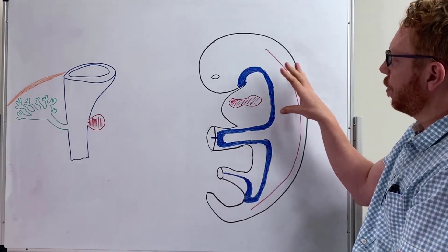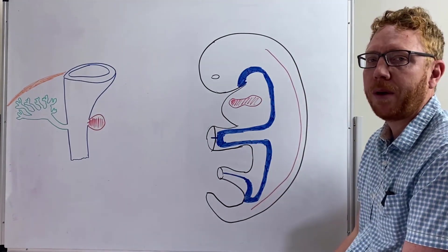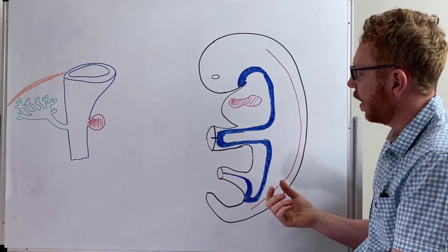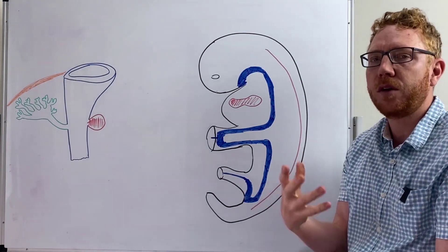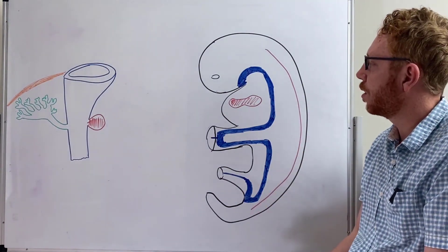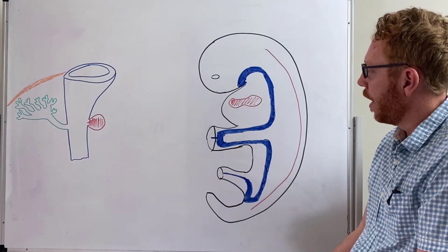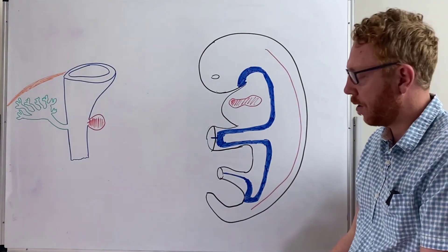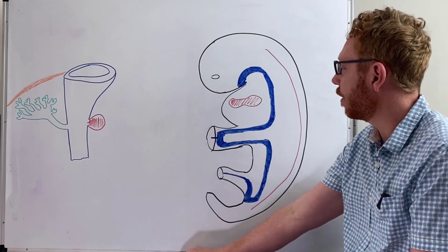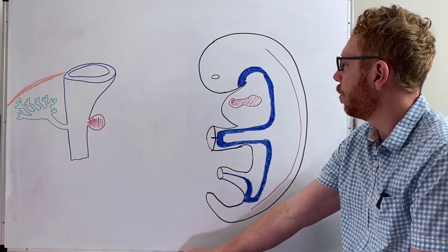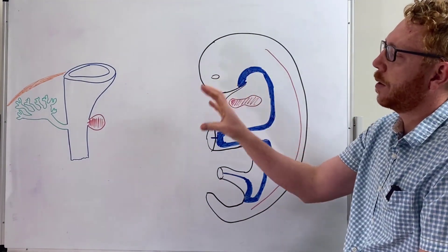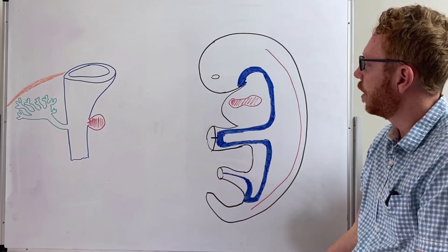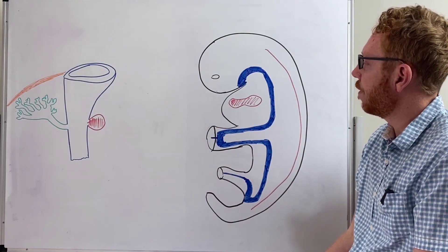The gut tube is broken into three main parts: the foregut, the midgut, and the hindgut. Today we're going to focus on a specific part of the foregut, which is essentially the stomach, the duodenum, and then the developing pancreas, which is the point of today.